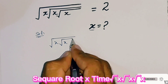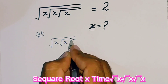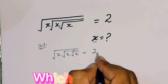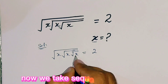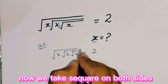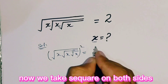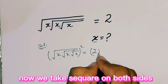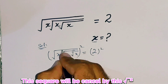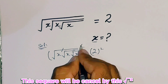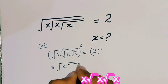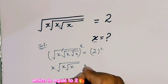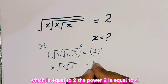We have square root of x, times square root of x, times square root of x, which is equal to 2. Now we take square on both sides. This square will be cancelled, leaving x times square root of x times square root of x, which is equal to 4.